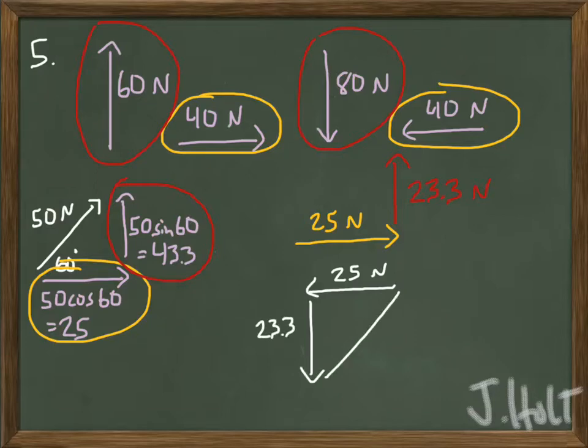So what I did was I added up all my x's. If it's right, it's positive. If it's left, it's negative. And then I added up all my y's. If it's up, it's positive. If it's down, it's negative.